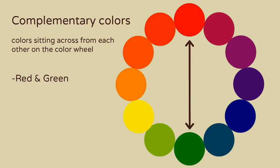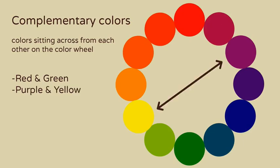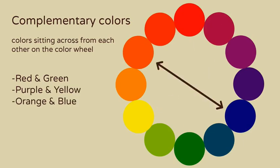Complementary colors sit across from each other on the color wheel. The most common pairs are red and green, purple and yellow, and orange and blue. Putting these next to each other creates great contrast and visual interest.